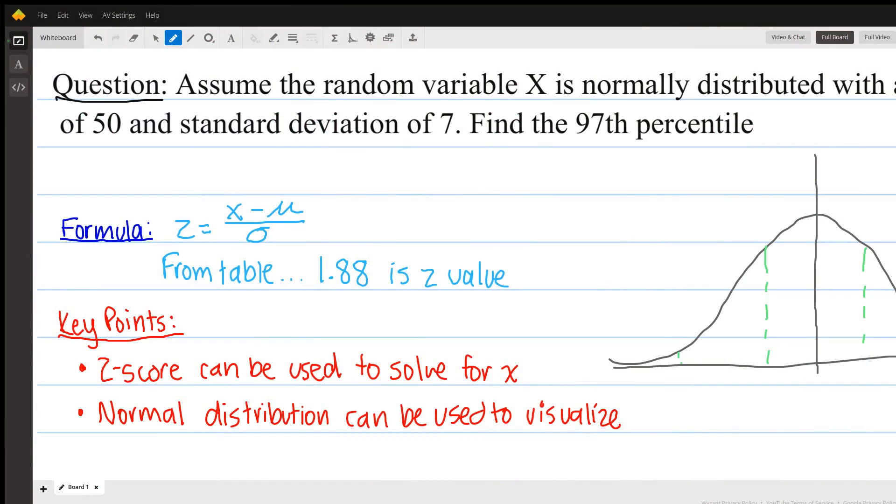Okay, so in this question, we're asked to find the 97th percentile if the random variable X is normally distributed with a mean of 50 and a standard deviation of 7.